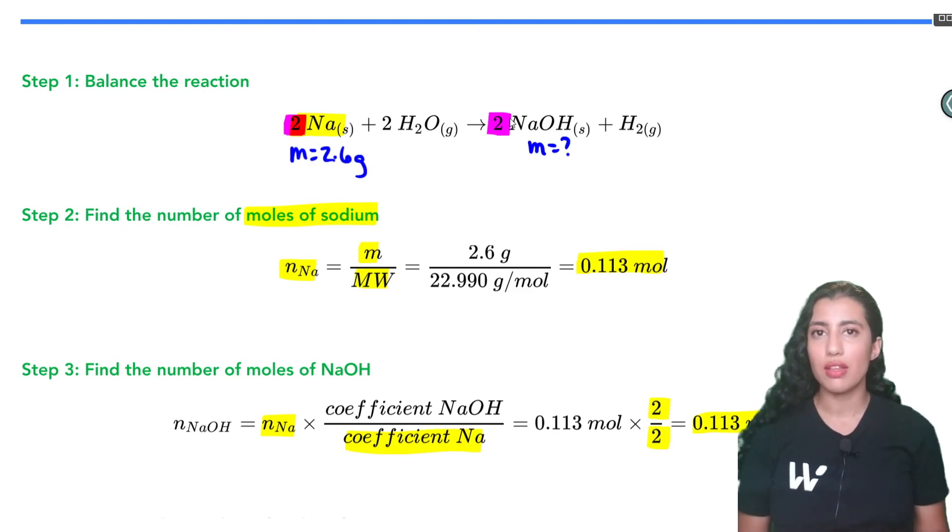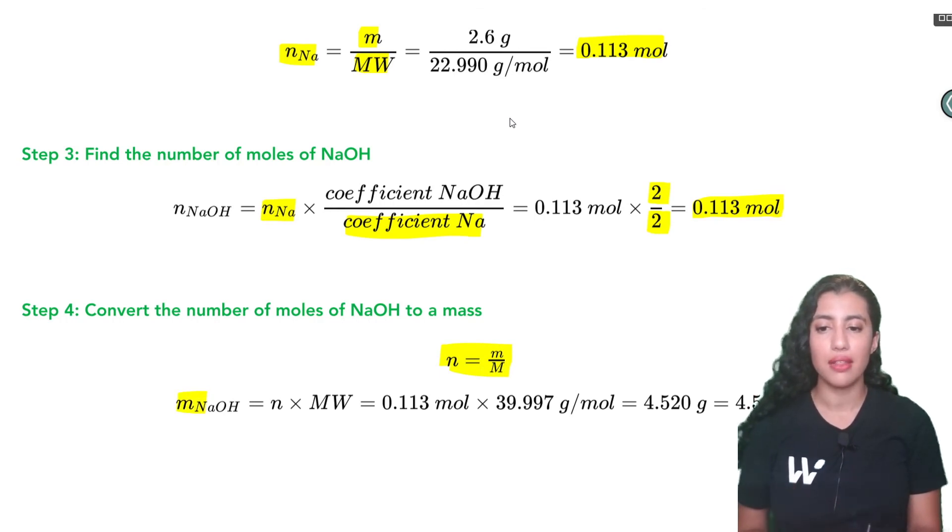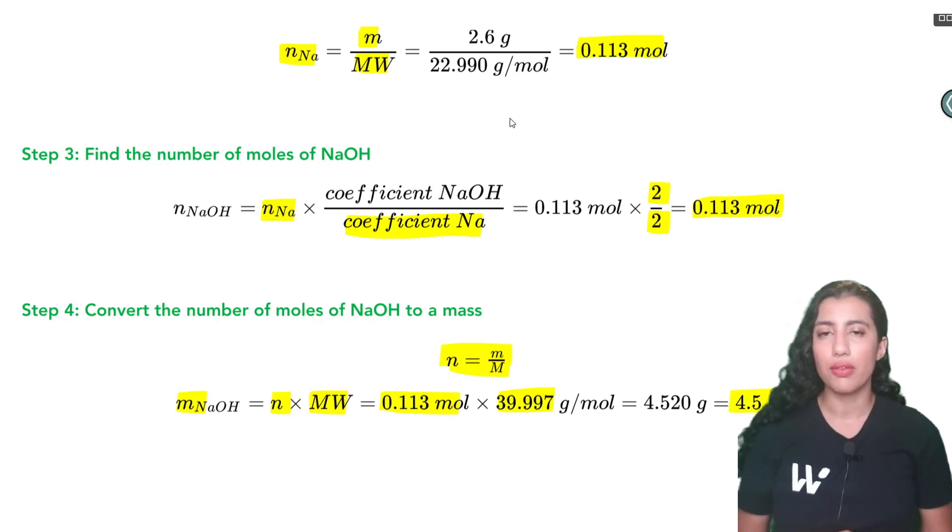Finally since we now have the moles of sodium hydroxide we can go ahead and solve for its mass. So we said we're going to use this same equation. We'll rearrange to solve for the mass. We're going to take the moles of sodium hydroxide and multiply by its molecular weight. So here we have its moles and then we got its molecular weight from the periodic table and you'll end up getting a mass of 4.5 grams.